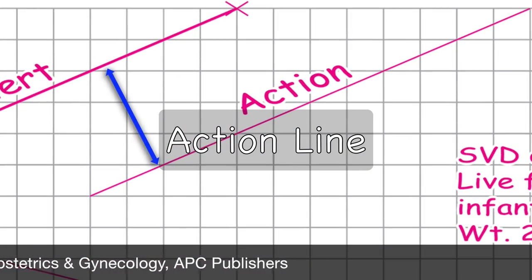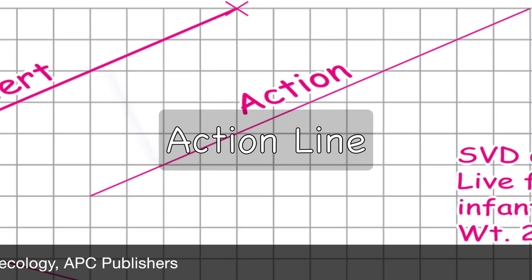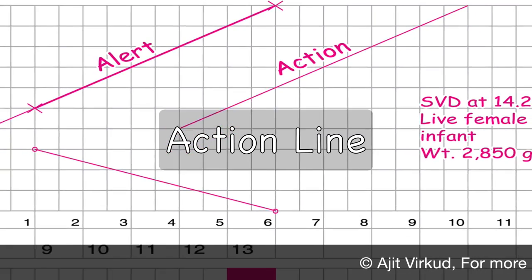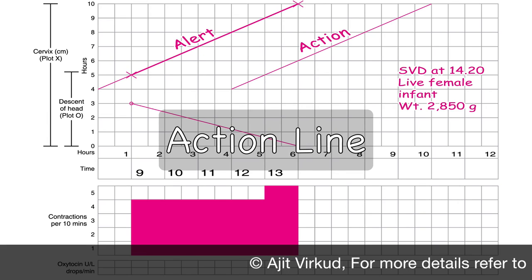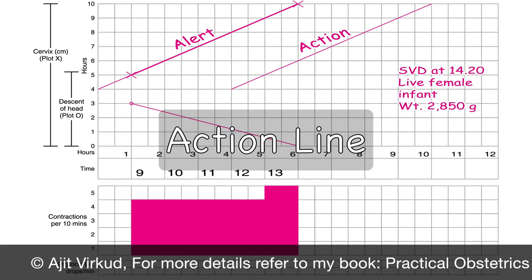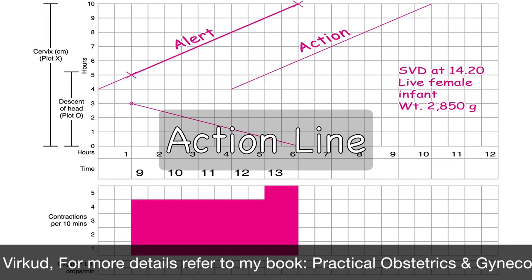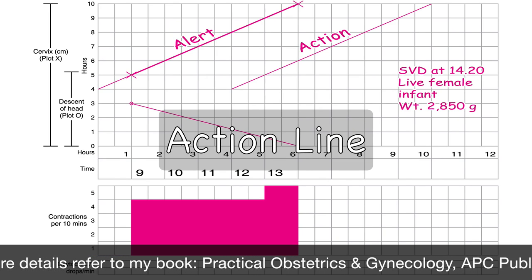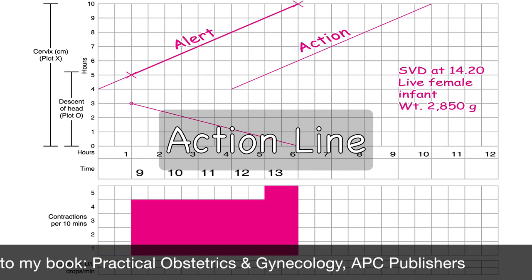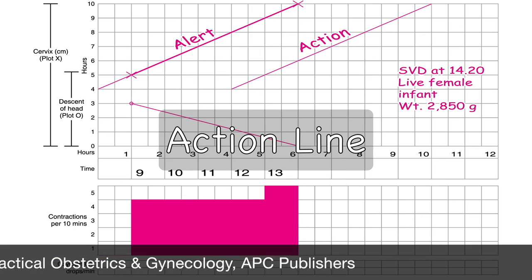The action line is parallel and four hours to the right of the alert line. If labor is not following the expected course, the plot of labor will begin to approach the action line signaling the need to make management decisions, that is critical assessment of the cause of delay and to take appropriate action such as caesarean section in a tertiary care hospital. The action line is also referred to as the hospital line because by the time labor progress retards to this stage, the woman must receive appropriate management action in a tertiary care hospital.